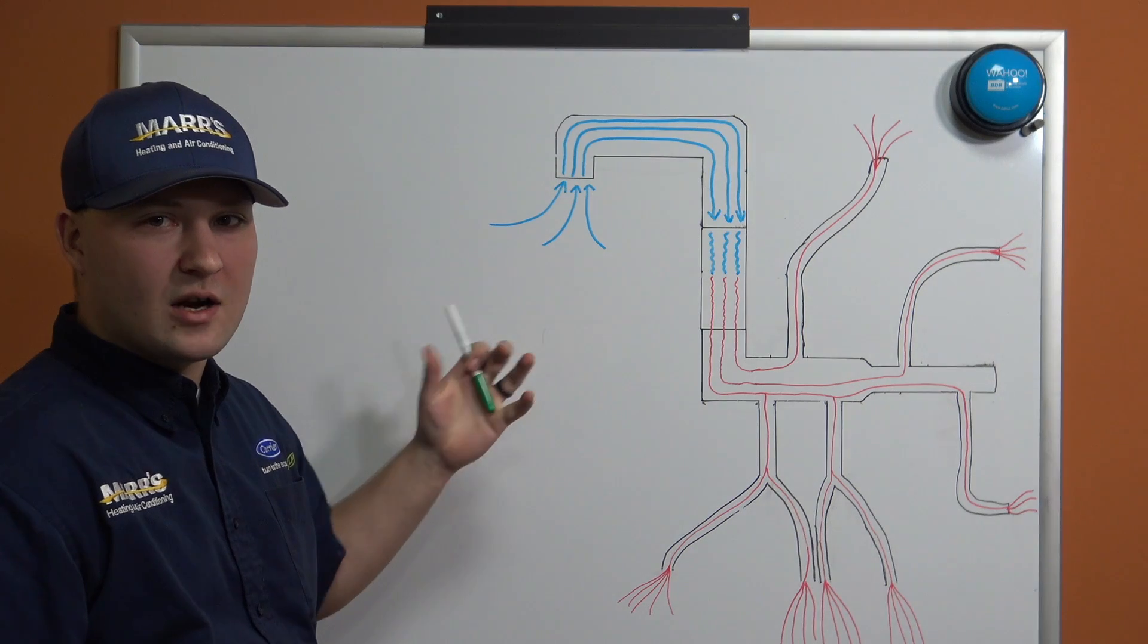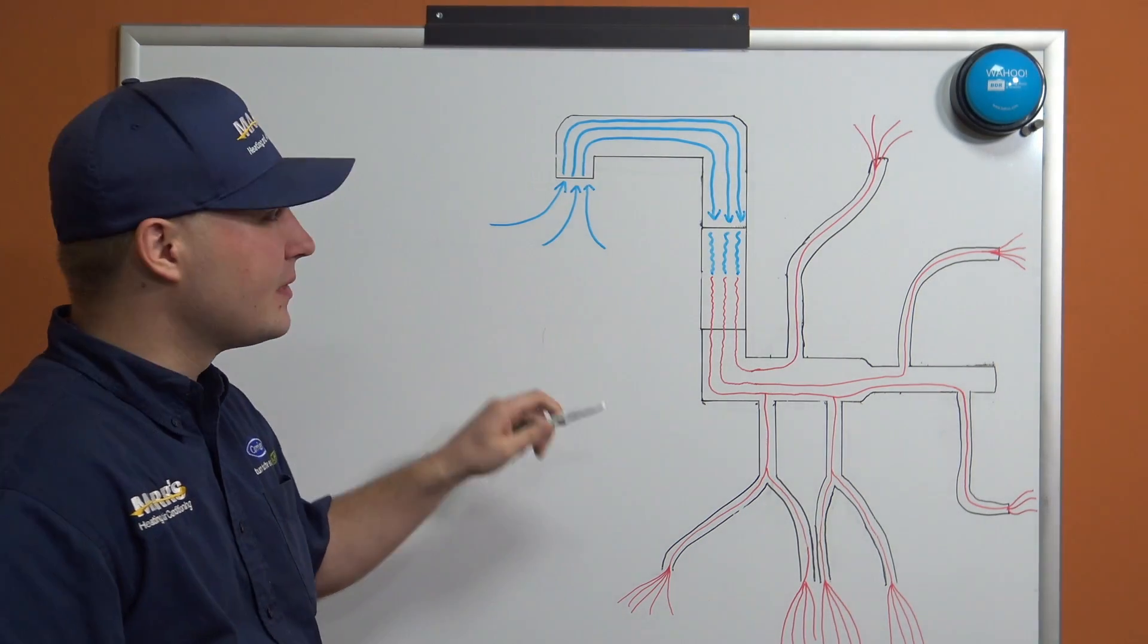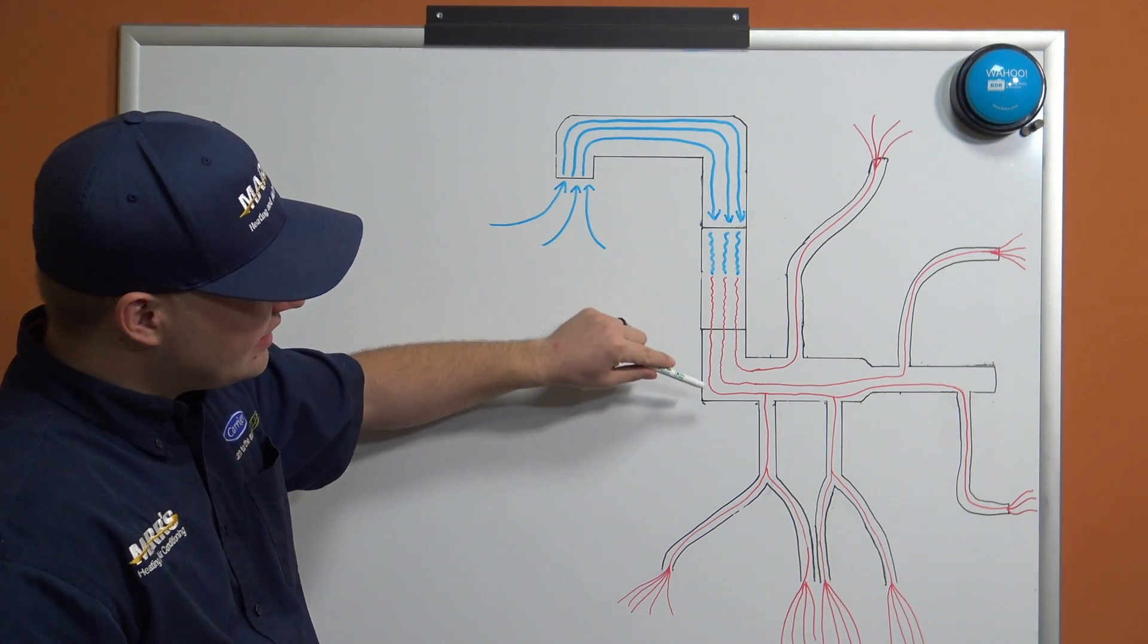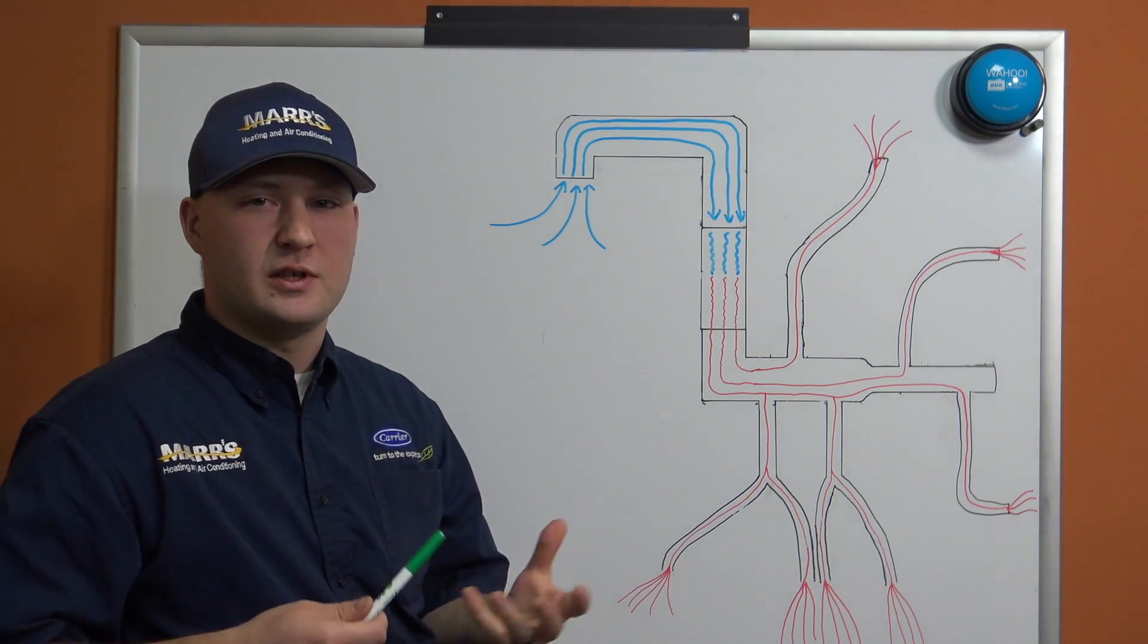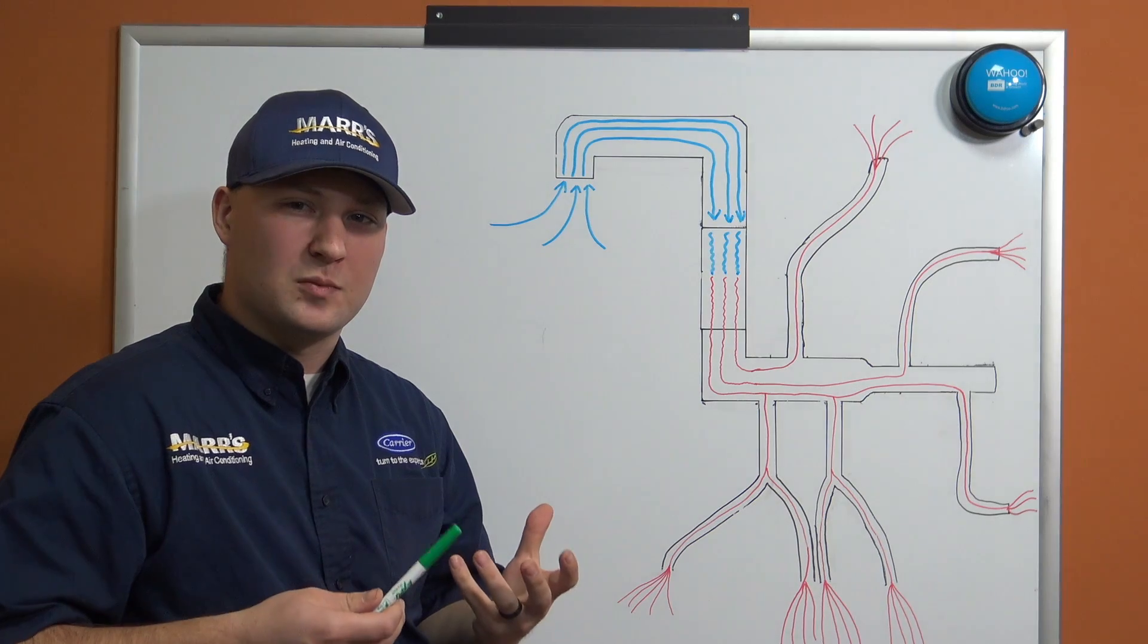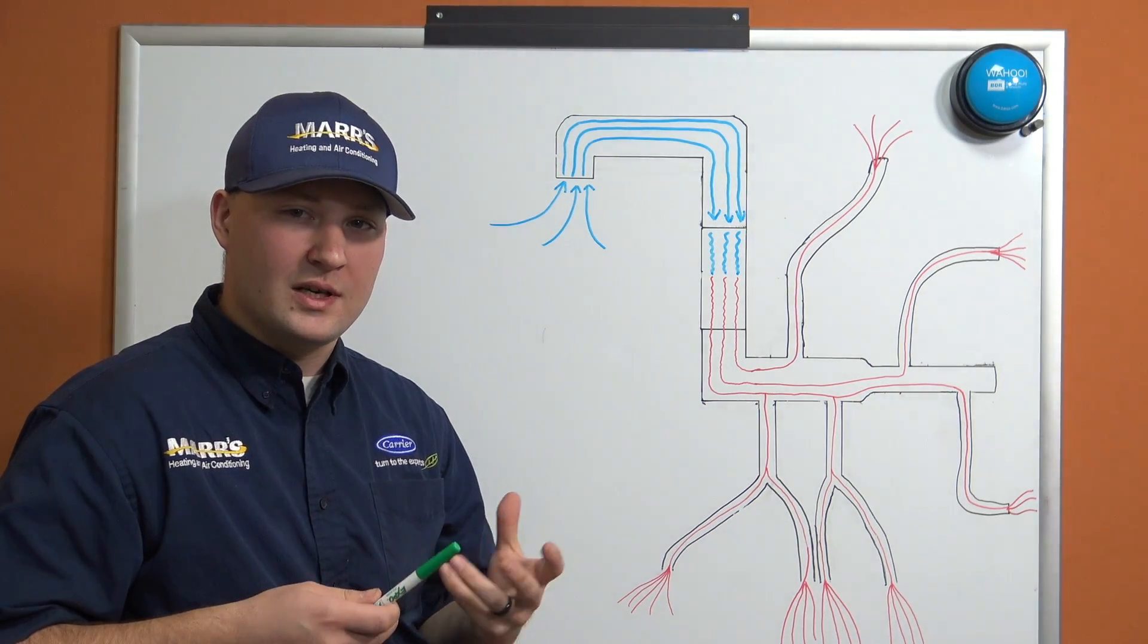This is the air being brought back into the system to be reheated and redistributed throughout our supply duct system. Typically you're going to have one to two supply ducts or heat registers in each room, and so that's what this is showing here.